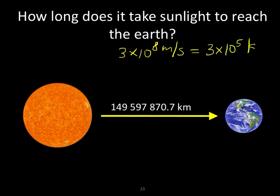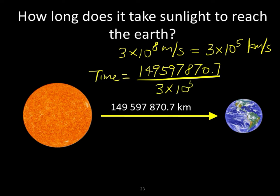Therefore, the time required will be this distance, 149,597,870.7 km, divided by 3×10^5 km/s. This gives us about 499 seconds, which is about 8.31 minutes. So it takes sunlight 8.31 minutes to travel from the Sun to the Earth.